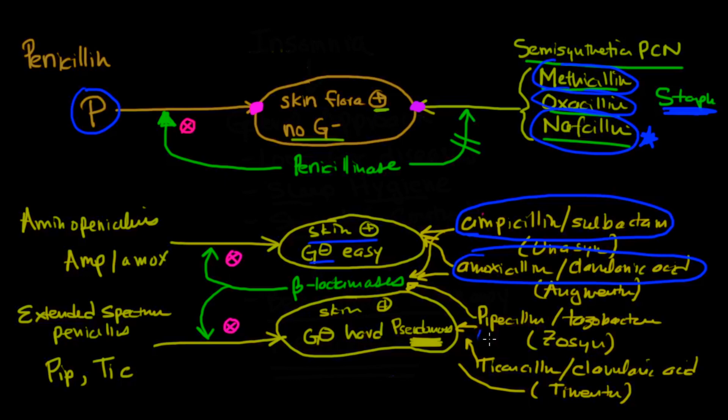The other option is Zosyn, or pipercillin-tazobactam, which has pseudomonal coverage, along with Timentin, which is ticarcillin-clavulonic acid, which also has good pseudomonal coverage. So depending on what your spectrum is that you want to use, you can use these different penicillins.